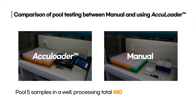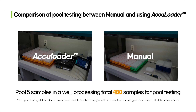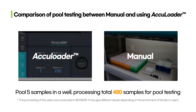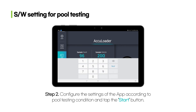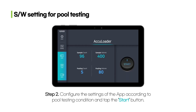How does the AccuLoader work in pool testing? We prepared 480 samples for pooling — 5 samples per well — and then performed pool testing with the AccuLoader and manually. To do pool testing easily for 480 samples with the AccuLoader, run the AccuLoader app, configure the settings according to pool testing conditions, and tap the start button.